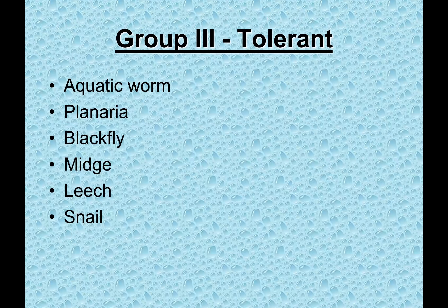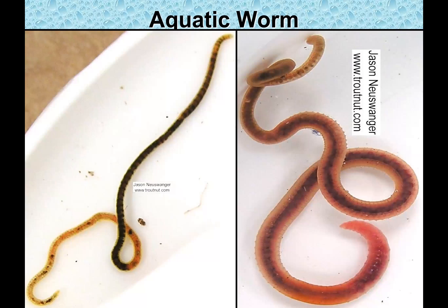Now the tolerant category — organisms that can tolerate pollution and thrive in dirty or clean water alike. First: aquatic worms, whether thread worms or round worms. This is why fishing worms work — there are worms in the stream. They live in sediment areas and don't care about water temperature, sediment load, or nutrient levels. They're tolerant of pollution.